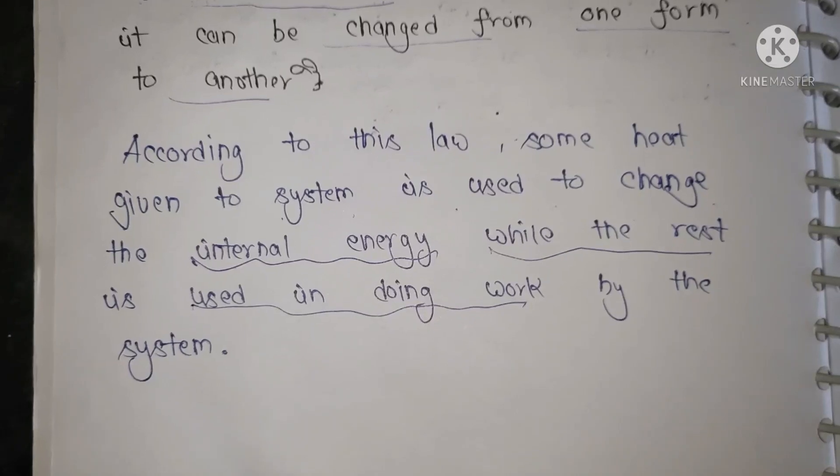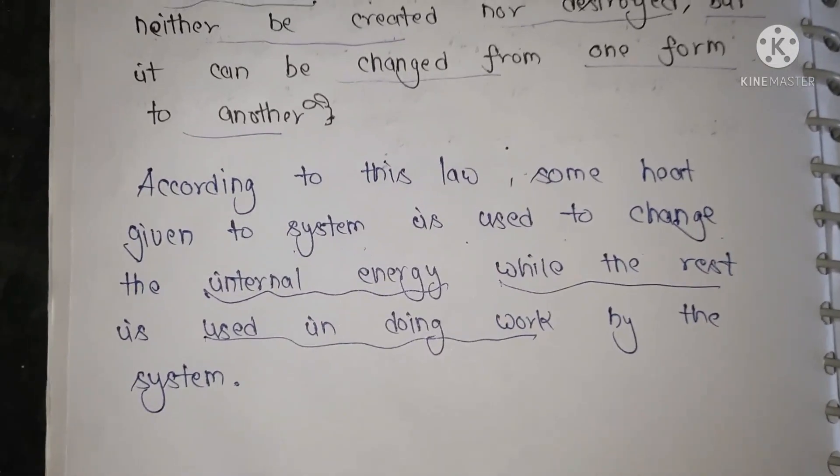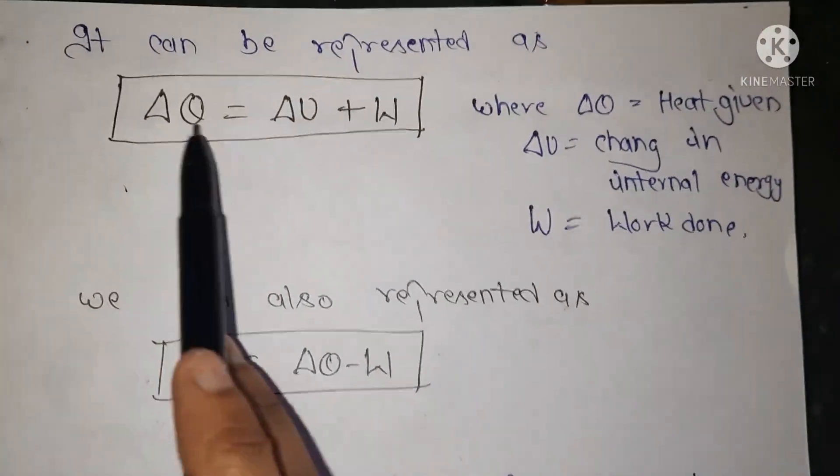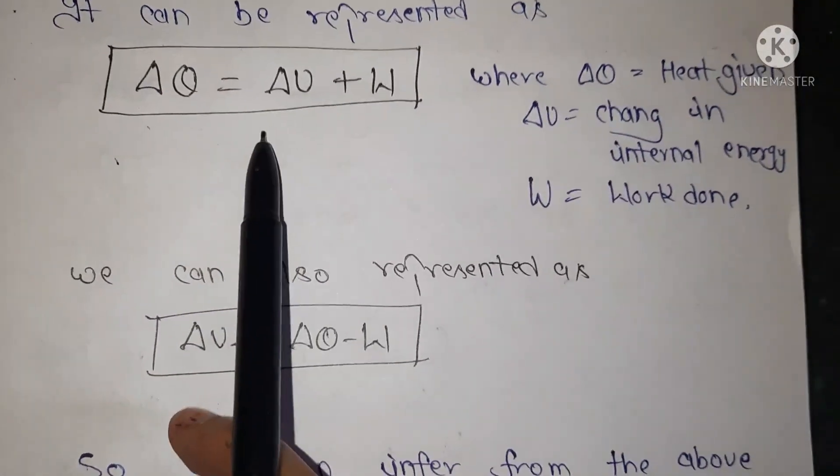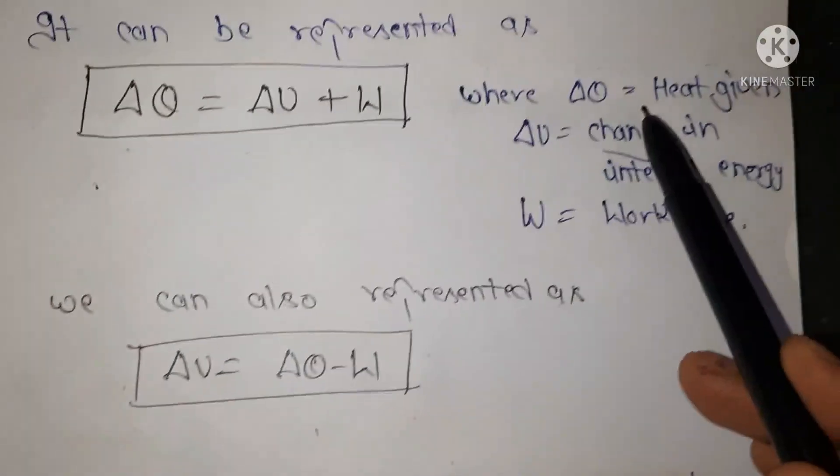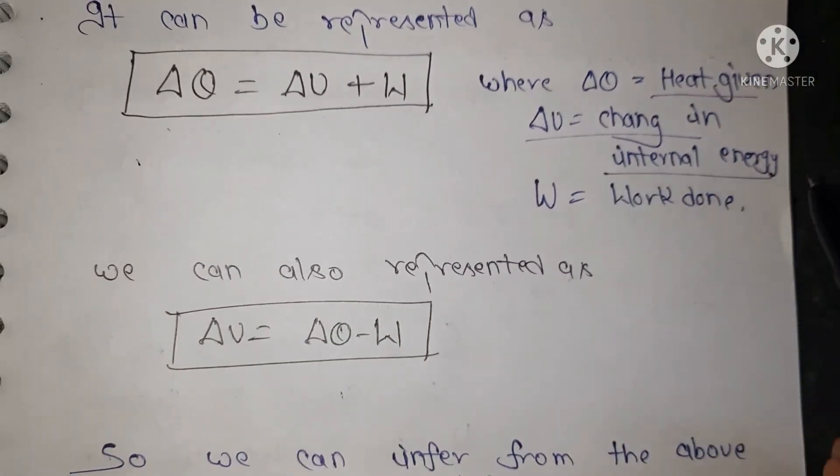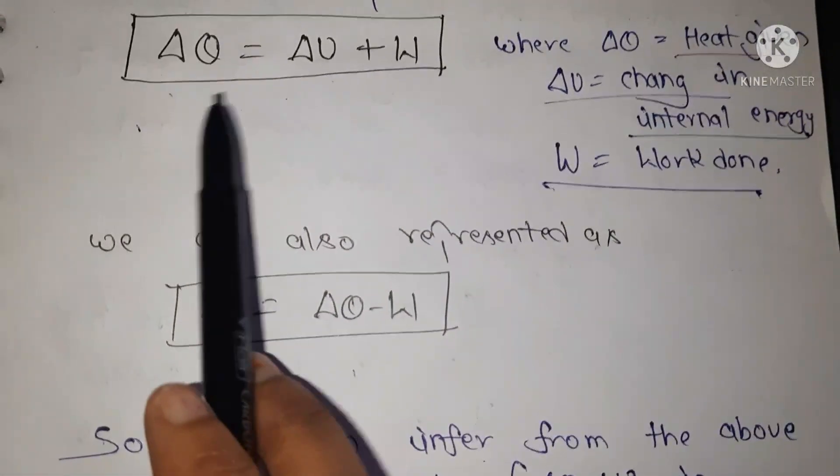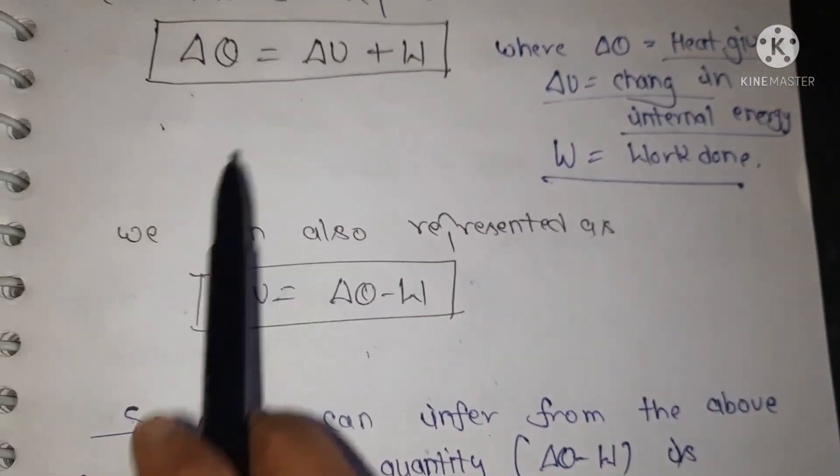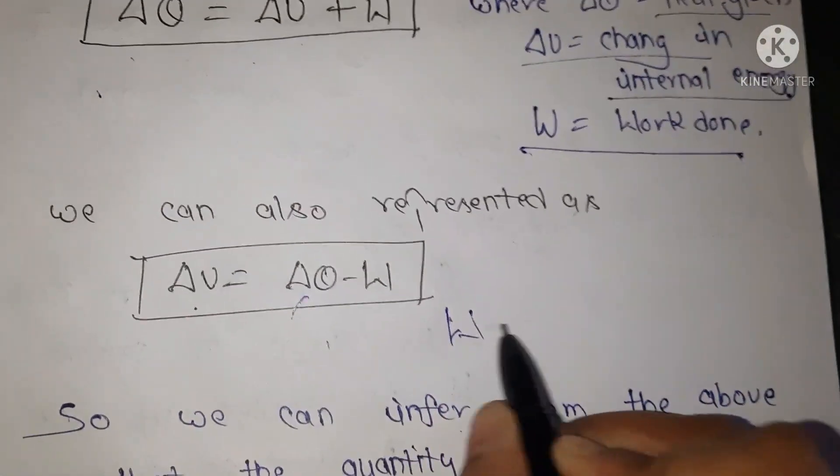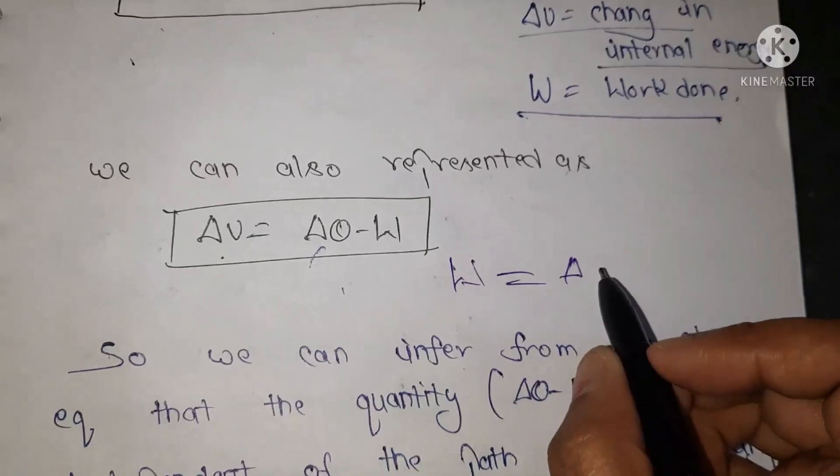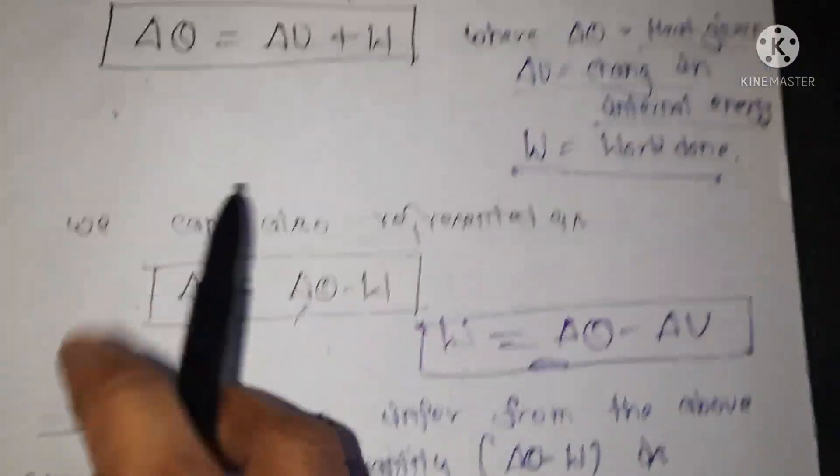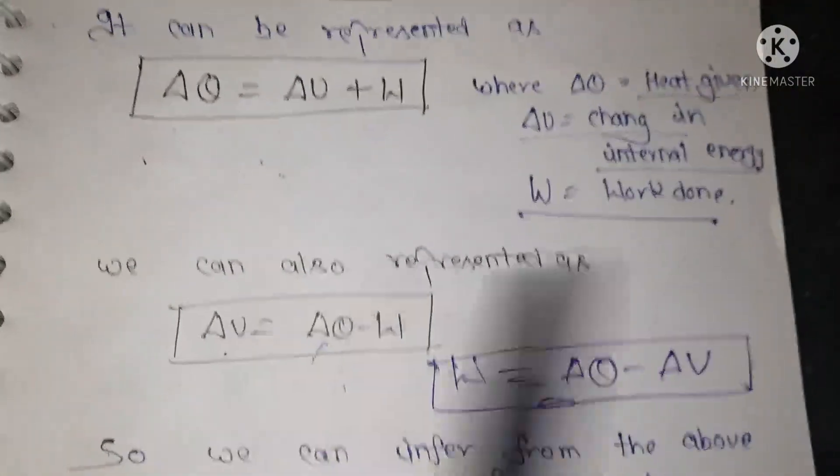Now follow the rules of thermodynamics first law. It can be represented as delta Q is equal to delta U plus W, where delta Q is heat given, delta U is change in the internal energy, and W is work done. We also represent from this rule, delta U is equal to delta Q minus W. So it is also from the one equation. This is the main rule for thermodynamics.